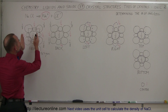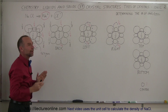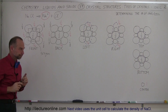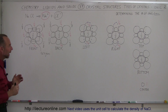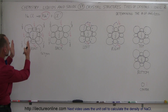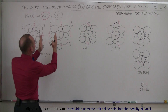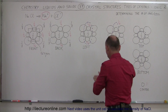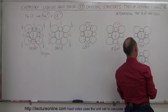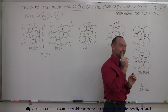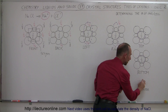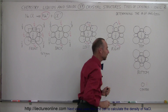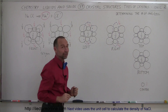Notice that every unit cell structure looks exactly the same as you put them side by side, top to bottom, and so forth. The best way to analyze this is to look at the unit cell from the front, the back, the left side, the right side, the top, and the bottom — and not forgetting that there is one ion in the very center of the cell structure, which is a sodium ion, so we have to count it as well.